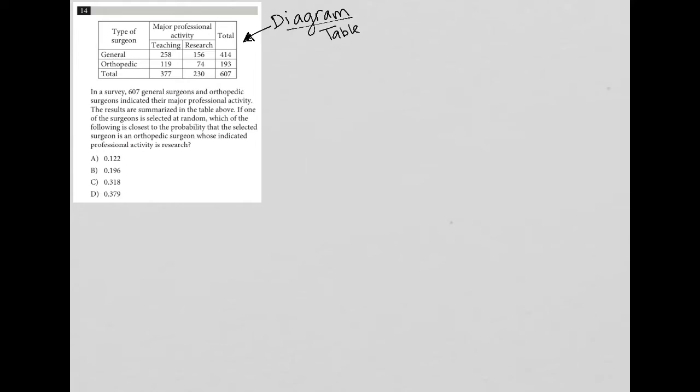So before moving on to reading the question, what I want to do is just make sure I understand the table. So it looks like I have two types of surgeons, general and orthopedic, and then I have those two types of surgeons separated by their major professional activity, either teaching or research. And then of course I have some totals here and across the row there.